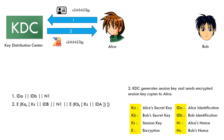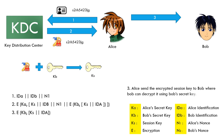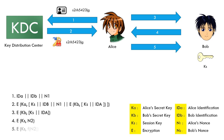Alice sends the encrypted session key to Bob, where Bob can decrypt it using Bob's secret key. Bob recovers the session key and sends back a nonce encrypted using the session key. Alice replies to Bob confirming the session key and sends back a fresh message.